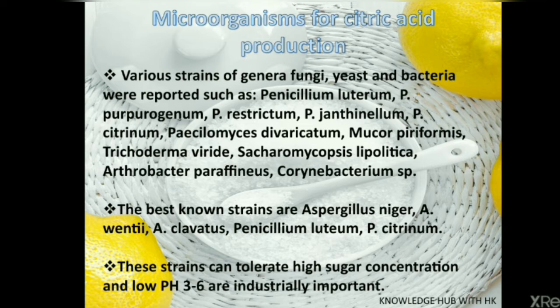These are various strains that can be used for the production of citric acid. But the best known strains are Aspergillus niger, Aspergillus fentii, Aspergillus clavatus, Penicillium luteum, and Penicillium citrinum. For improved industrial production, mutant strains of Aspergillus niger have been developed because these strains can tolerate high sugar concentration and low pH of 3 to 6, which reduces the synthesis of undesirable byproducts like oxalic acid, isocitric acid, and gluconic acid. These mutant strains have high efficiency, meaning high yielding, and can be easily cultivated.